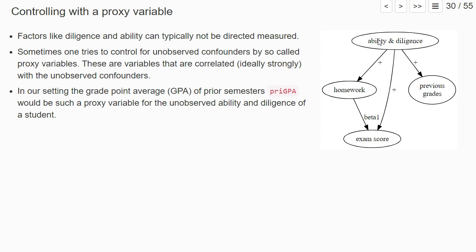But even if one cannot perfectly measure some confounders, sometimes one tries to at least reduce the bias by controlling for such confounders using so-called proxy variables. A proxy variable is a variable that's correlated, ideally strongly correlated, with the unobserved confounders.